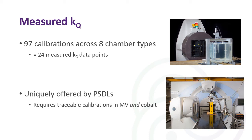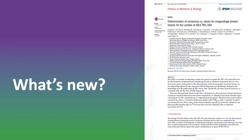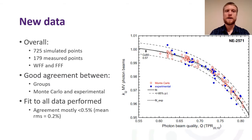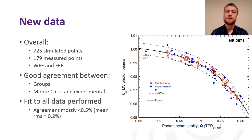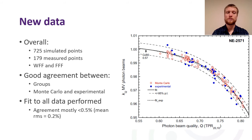The consensus data combines 725 simulated KQ data points and 179 measured KQ data points, including both flattening filter and flattening filter-free beam qualities. ARPANSA contributed 13% of the measured data points and 12% of the simulated data points. On the right hand side there's a representative figure for the PTW 2571 Thimble chamber, and you can see good agreement between most of the data points, demonstrating agreement between the different research groups and between the Monte Carlo and experimental data collected.